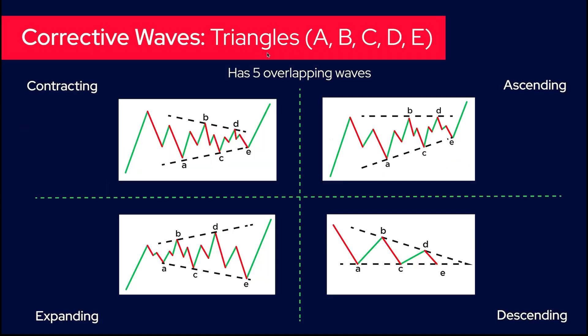Triangles - this is the last pattern of corrective waves. Triangles are beautiful patterns. You can have four types of triangles. They have five waves, it's a corrective pattern, so they're labeled ABCDE. You have four types: first is contracting. Contracting is as we saw with the wedge pattern - you have a convergence of the support level and the resistance level.